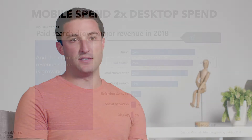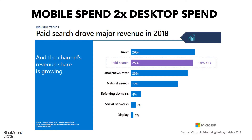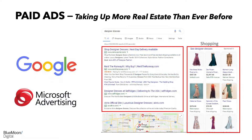My name is Matt Freeman and I'm the paid search manager here at Blue Moon. Mobile is now spending twice as much as desktop. Paid search is driving 25% of overall e-commerce revenue, which is up 6% year-over-year and will continue to grow in 2019 and into 2020. Paid ads are taking up more real estate than ever before, which is all the more reason to be as competitive as possible and be at the top of each SERP.